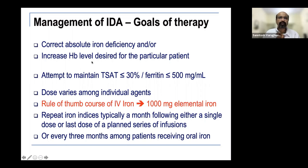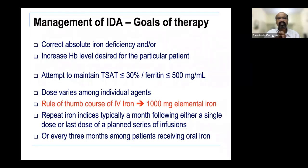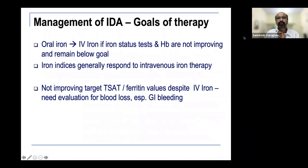The goals of therapy for iron deficiency anemia in CKD are to correct absolute iron deficiency and achieve target hemoglobin. The consensus is to maintain T-sat around 30% and ferritin around 500 ng/mL, though as noted, the ferritin goalposts are moving higher. The rule of thumb dose is about 1000 mg of elemental iron. Repeat iron indices one month after the last dose to assess response. For oral iron, repeat after three months — if there's inadequate response, switch to IV iron.